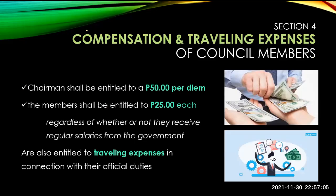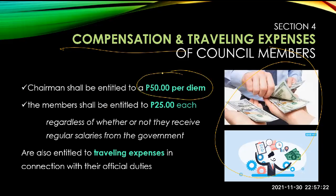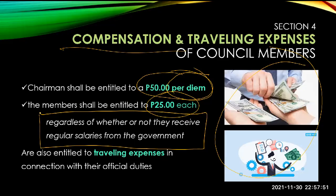As Council members, they are also given compensation. The Chairman shall be given 50 pesos per diem — meaning for each day — while the members will have 25 pesos per diem. Right now this sounds very low given current costs. Please take note that regardless of whether or not these people receive regular salaries from the government, whenever they are traveling in connection with their official duties, they are entitled to receive traveling expenses as well.